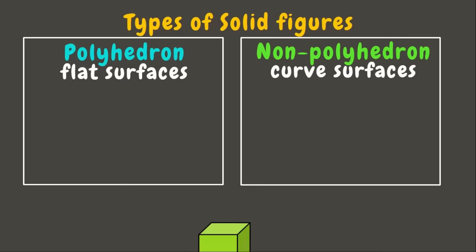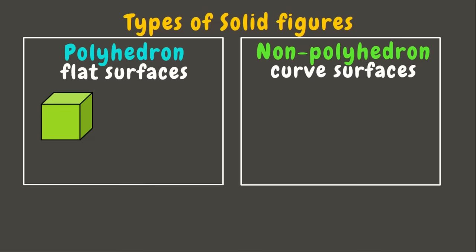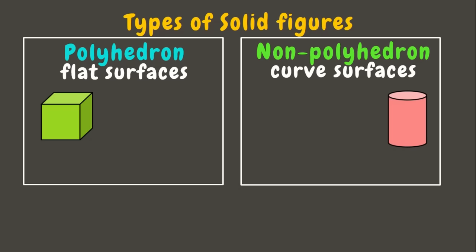The first one is a cube — is it polyhedron or non-polyhedron? Very good, it is a polyhedron since it has flat surfaces. The next one is a cylinder — it is a non-polyhedron since it has a curved surface. Next, we have a rectangular prism — yes, it is a polyhedron.